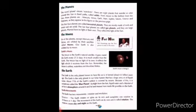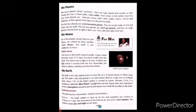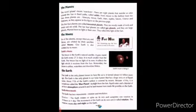The planets — the word 'planet' means 'wanderer.' There are planets that wander or orbit around the sun in fixed paths called orbits. From closest to farthest from the sun, the planets are Mercury, Venus, Earth, Mars, Jupiter, Saturn, Uranus, and Neptune, as they appear in the figure on the previous page.